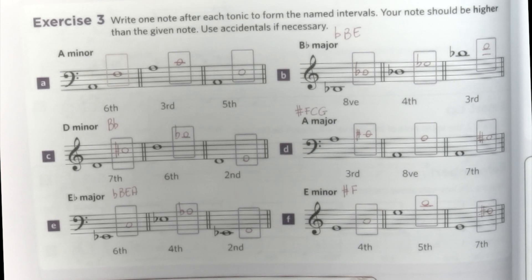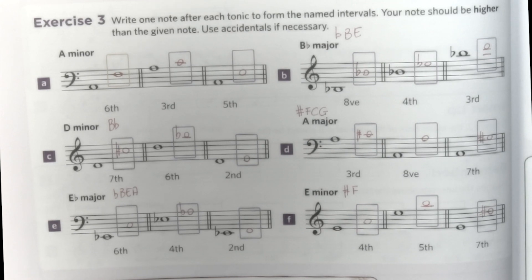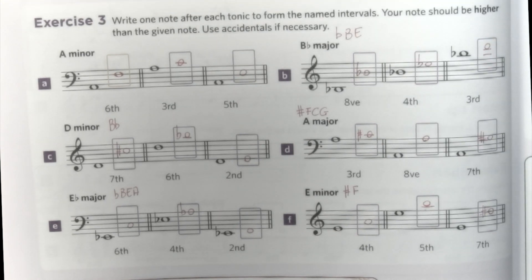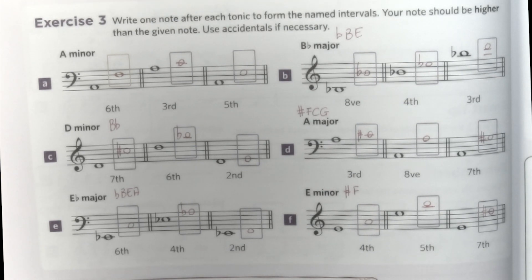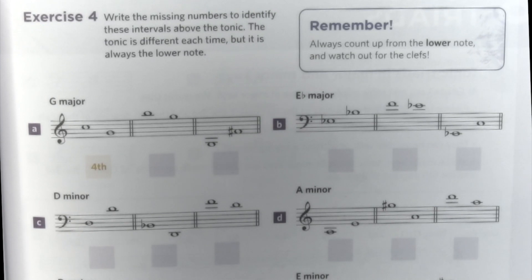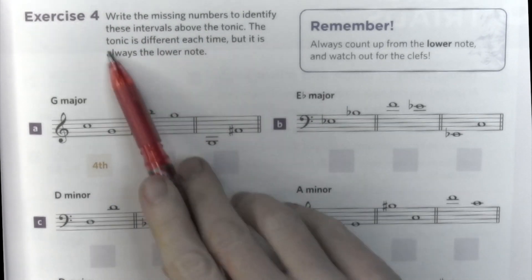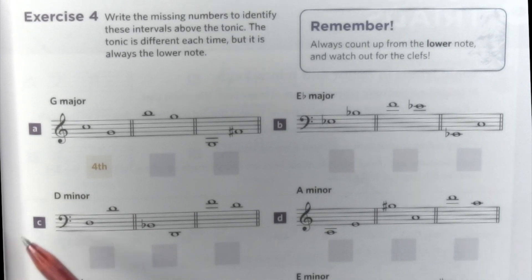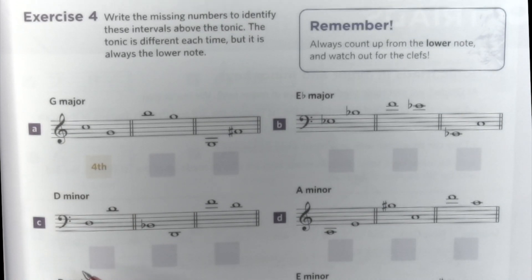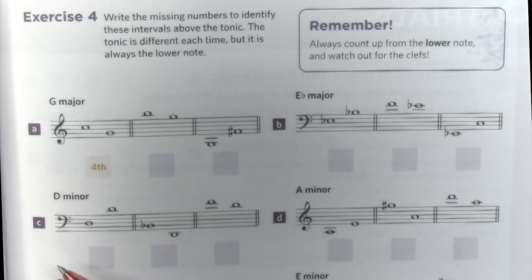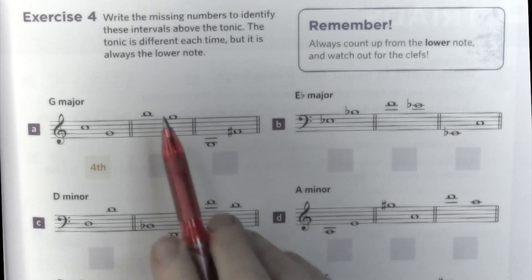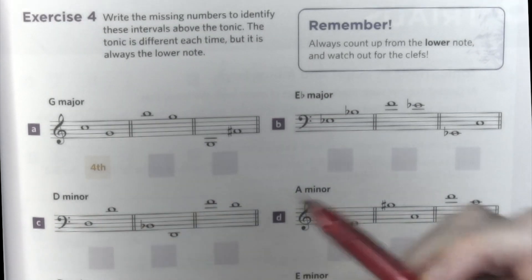I hope this is useful and not too confusing. How did you find it? Thank you very much. Let's move on to exercise four. In exercise four we need to write the name of the interval. This is easier because we don't have to identify the type of interval, just the number. So we only need to count the distance between them from the bottom to the top note. One, two, and three — this is a third.